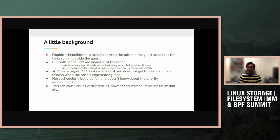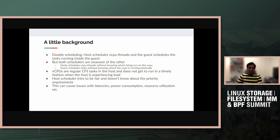A little background: in Chrome OS we have Android running as a guest, and we were seeing some latency issues with the Android apps. On investigation, we found the issue is basically a disconnected scheduling between the guest and the host. The guest doesn't know where the host is scheduling it, and the host doesn't know what is running inside the guest. So if the guest is running something highly latency-critical, the host doesn't know and might defer it, causing latency issues.